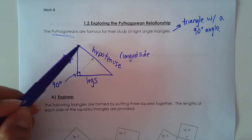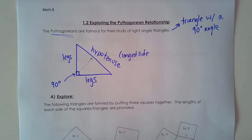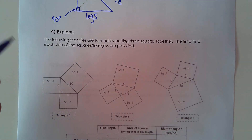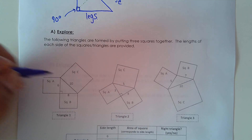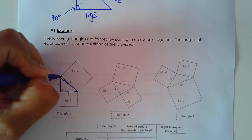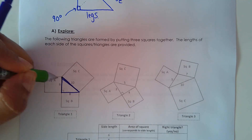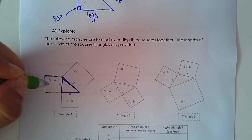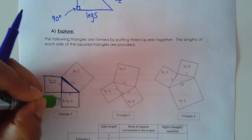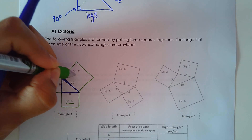So what they did was they looked at right-angled triangles and found that the three sides and the angles were all related. We're going to do a little exploration as well. Down here, we have triangles that are formed by putting three squares together. Let's look at triangle one. There's the right-angled triangle. This side here is the hypotenuse and these are the legs. With this side, we've made a square off of that side — we'll call that square A. On this leg, we've made a square off of it, and we'll call that square B. On the hypotenuse, we've made a square off of that side, and we'll call that square C.